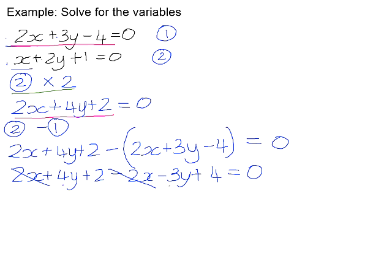So we're left with 4y subtract 3y, which is y. 2 add 4 is 6, and that means that y is equal to negative 6.